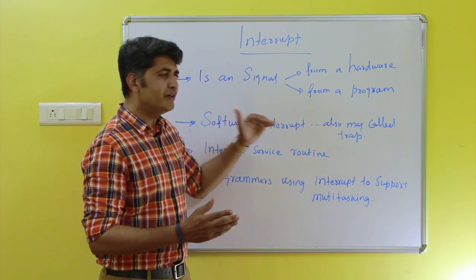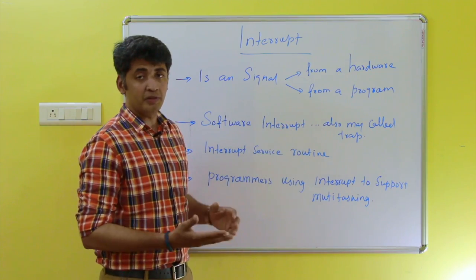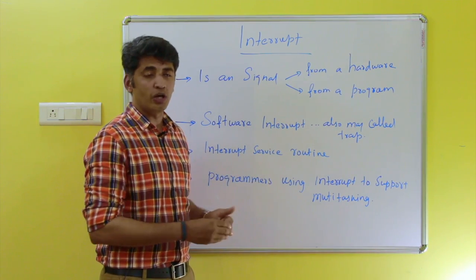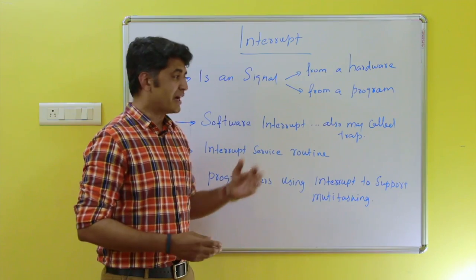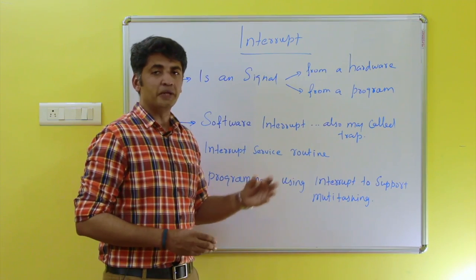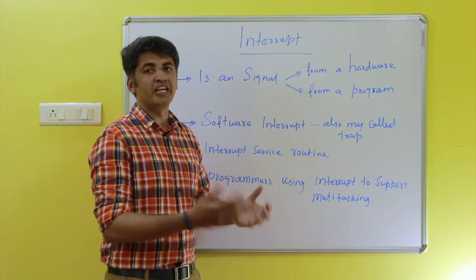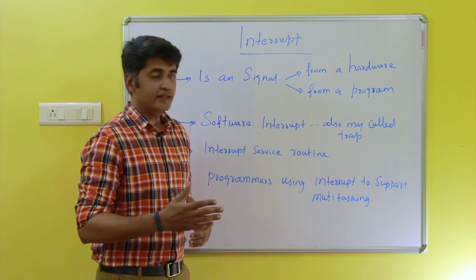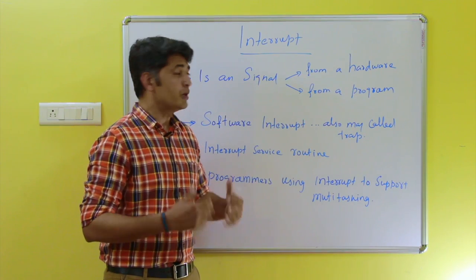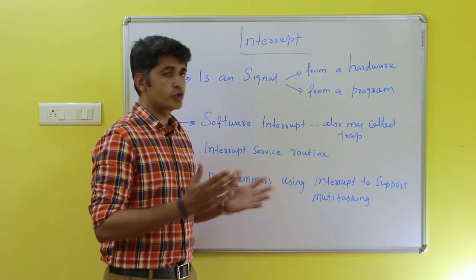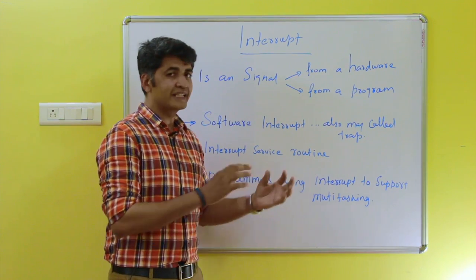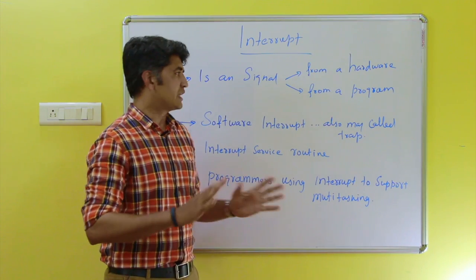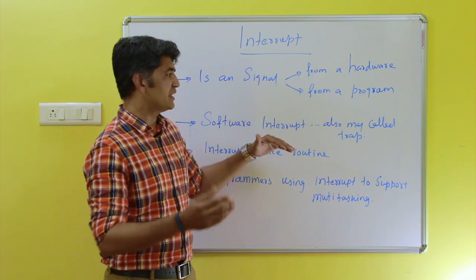A hardware interrupt may not be solvable, because if any error occurs in the hardware, the user needs to give attention to that particular hardware — it needs to be changed or taken care of. So the system will give information or an intimation to the user. That is the hardware interrupt.